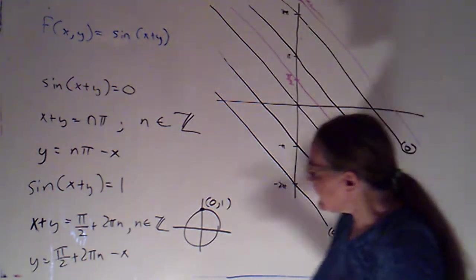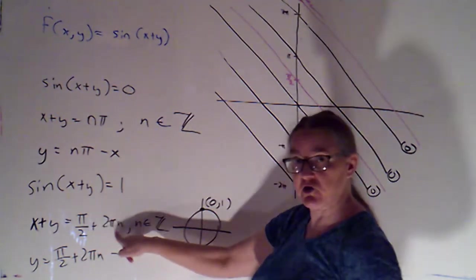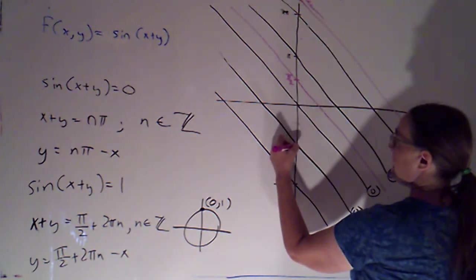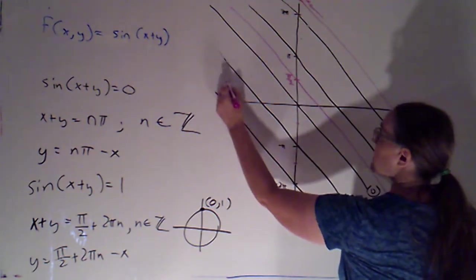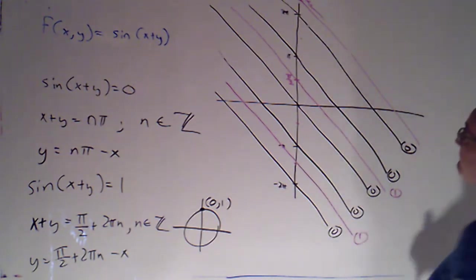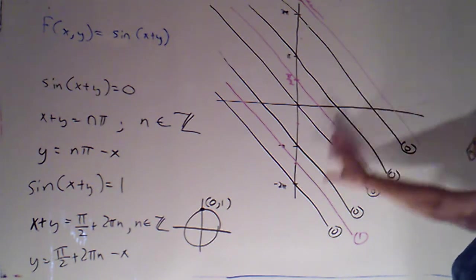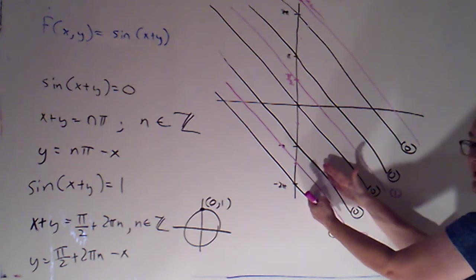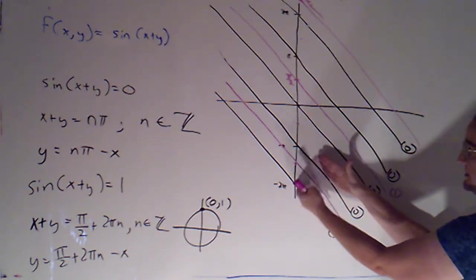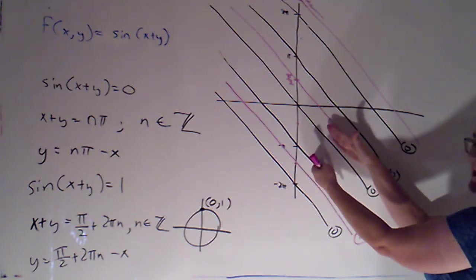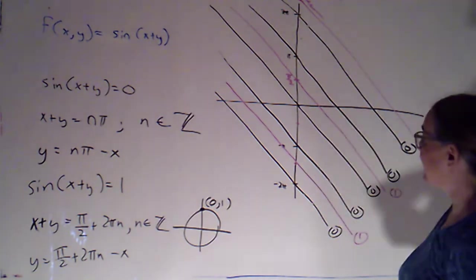If n = −1, then π/2 − 2π = −3π/2. So we're getting level curves there as well. Now, between two consecutive zeros on a sine graph, you either go up to positive 1 or down to negative 1. These correspond to consecutive places where the z value is 0 — between these two zeros we've got a 1, but between these two we don't, because the sine values are going to be negative in that region.